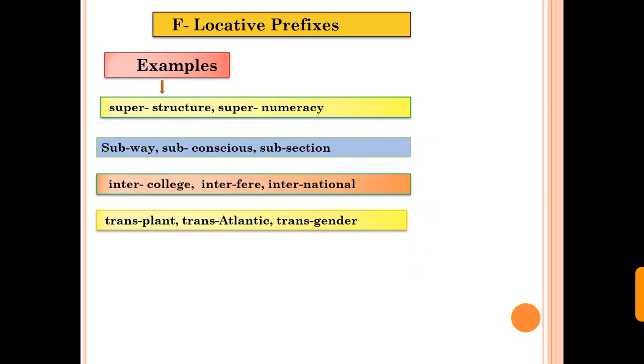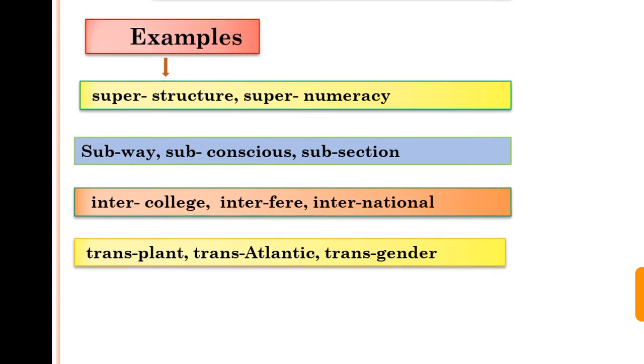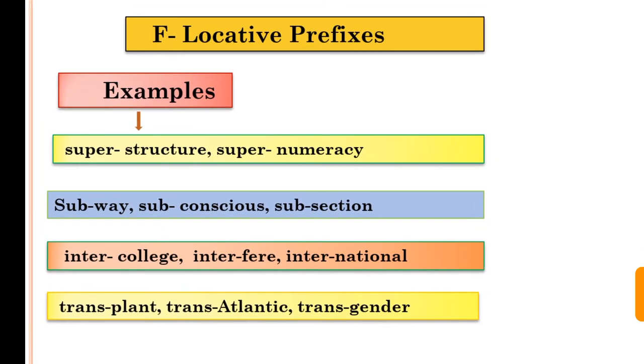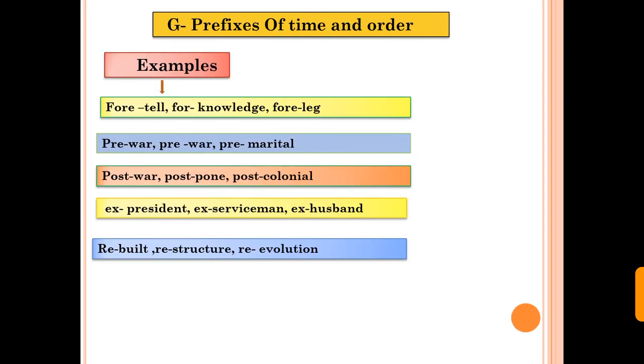Now locative prefixes. Locative prefixes are super, sub, inter, trans. These are locative prefixes. This shows the location. And that is why it's called locative prefixes.